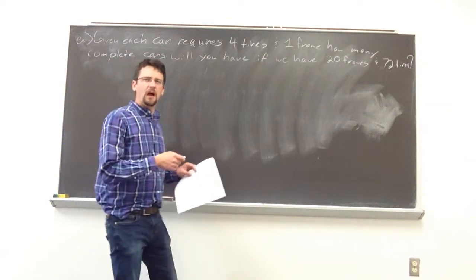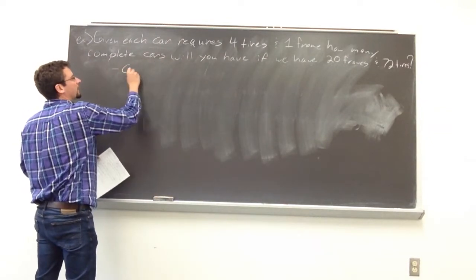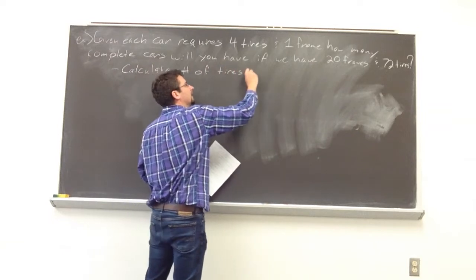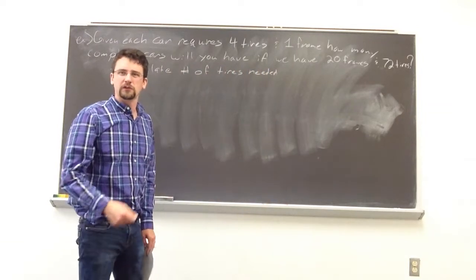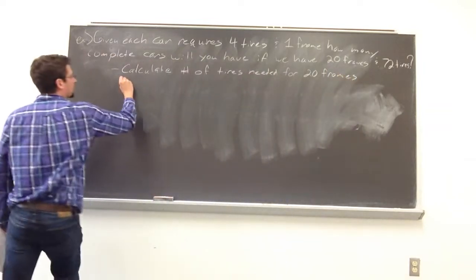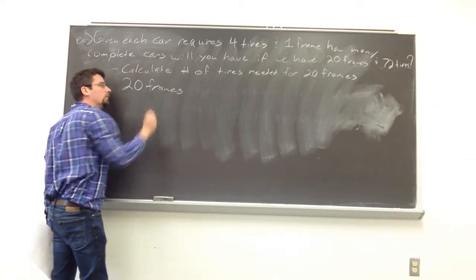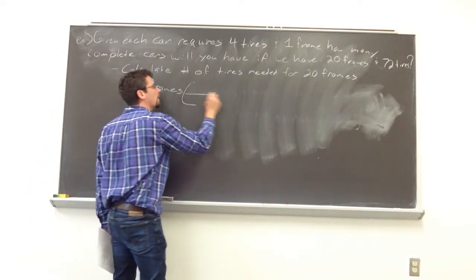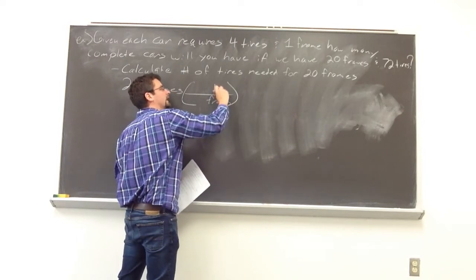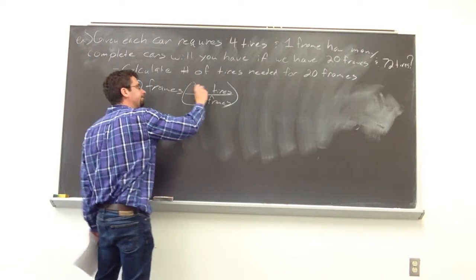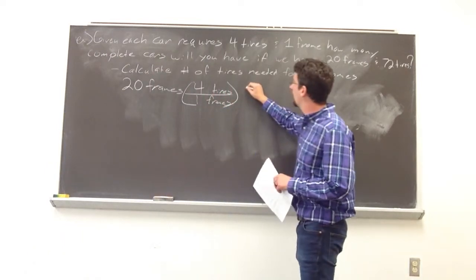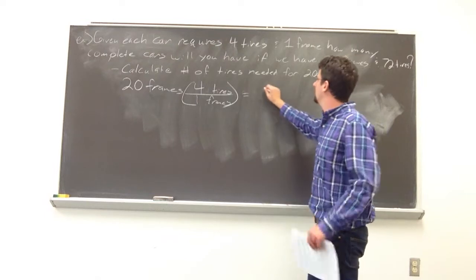There are a couple of different approaches, but here's the thought pattern we'll go through. First, we're going to calculate the number of tires needed for those 20 frames. Starting with 20 frames, we need to cancel units — frames in the denominator, tires in the numerator. From the problem, for every four tires we require one frame, leading to one car. So 20 times 4 is 80, meaning we need 80 tires.